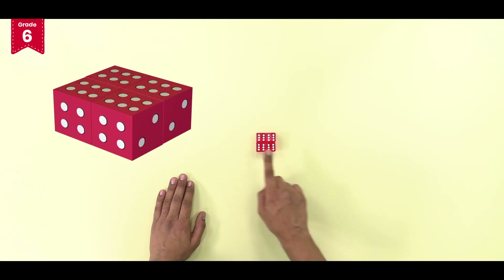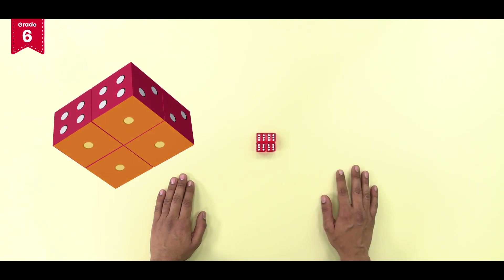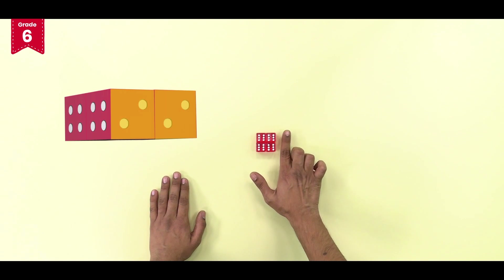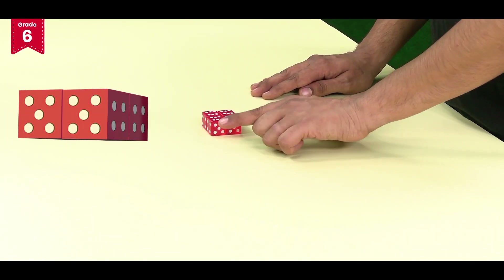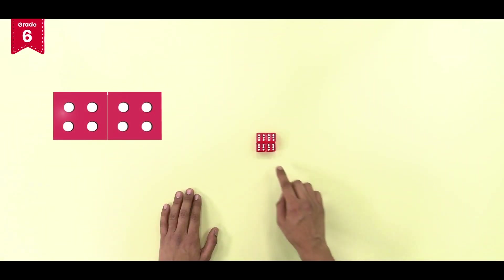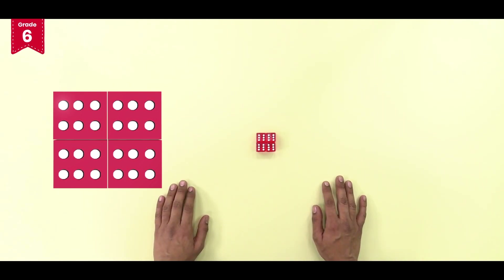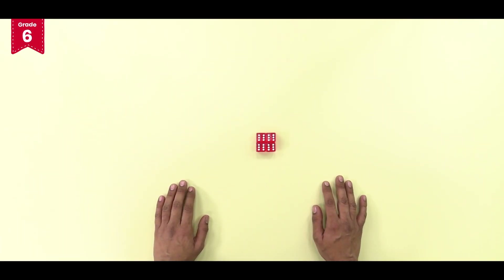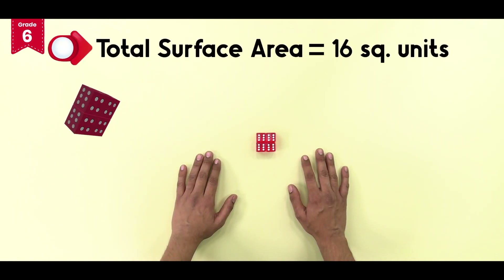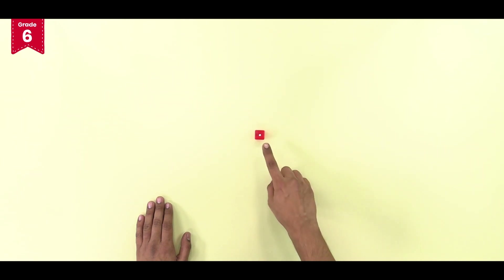What about the total surface area of this shape? It has four visible square faces on the top and four square faces on the bottom. There are two visible square faces on each side, and two visible square faces in the front and two in the back. There are a total of 16 visible square faces, so the total surface area of this shape is equal to 16 square units.